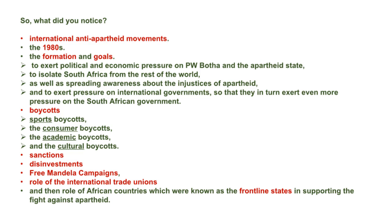You would then be required to discuss the Free Mandela campaigns, the role of the international trade unions, and then the role of African countries which were known as the frontline states, in supporting the fight against apartheid. When you have discussed the various aspects in the order shown above, then you will be maintaining a good line of argument. Don't forget that all the questions require you to explain how the anti-apartheid movements led to the downfall of the apartheid regime.